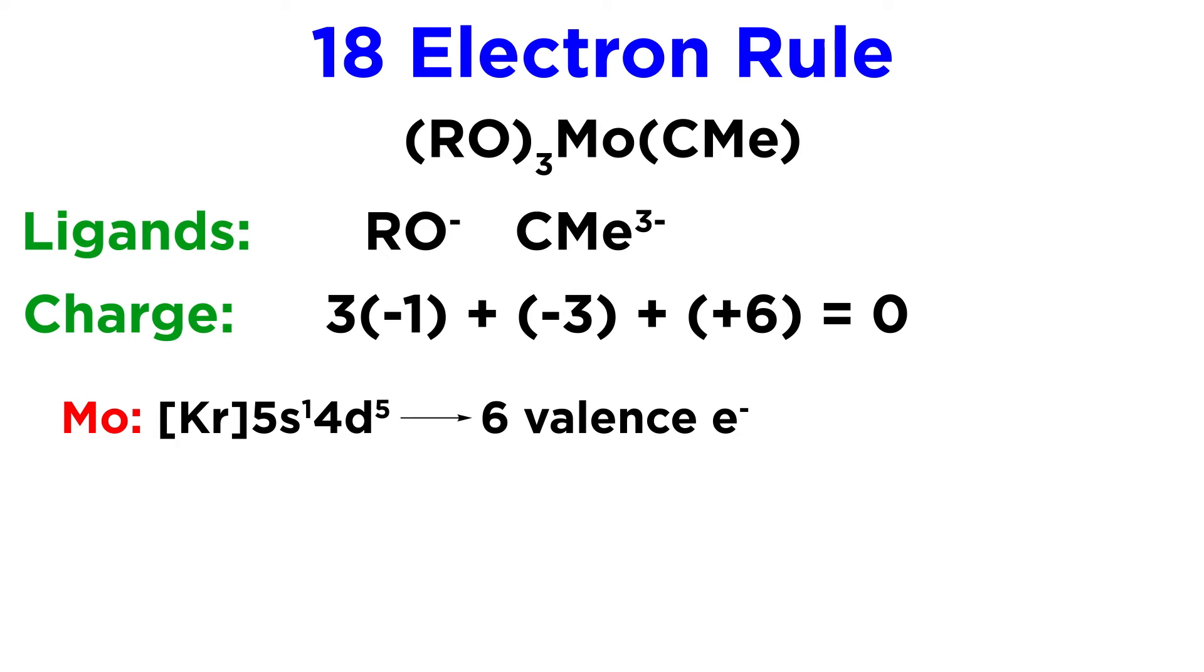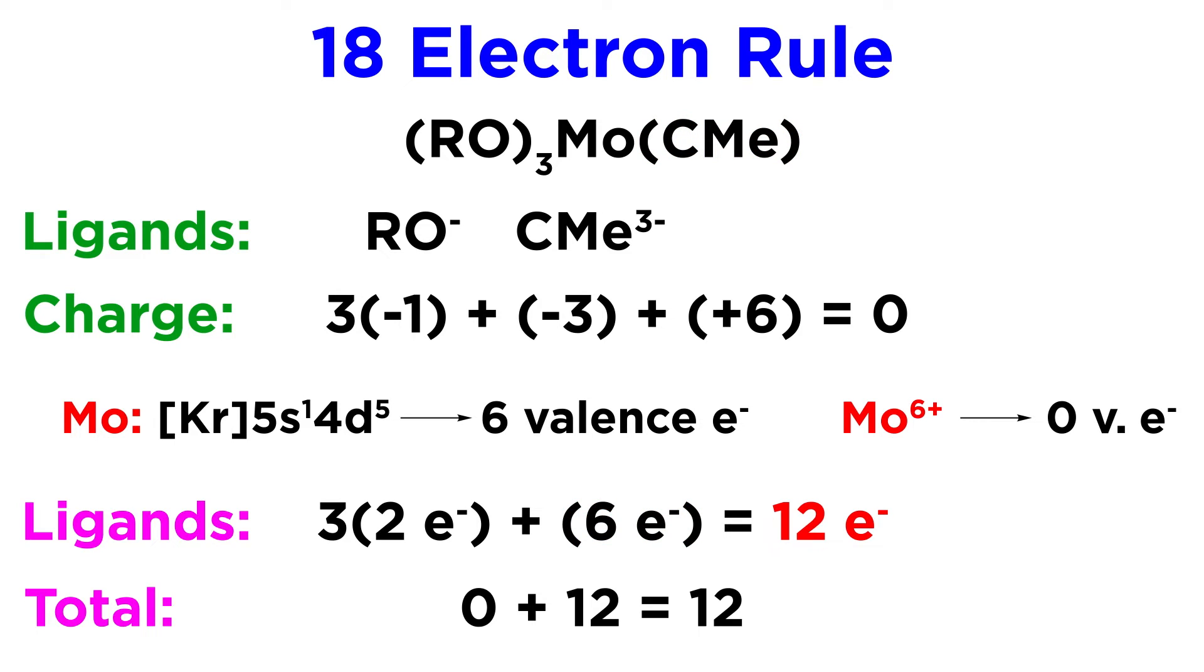Neutral molybdenum has six valence electrons, given that its electron configuration ends in 5s1 4d5, so molybdenum six plus has lost all of its valence electrons. So the only electrons to count are from the ligands, that's two per alkoxide times three, and then six for the alkylodyne, since it makes a triple bond with the metal, and that gives us a total of twelve. That is dramatically less than the ideal count of eighteen, so this is likely to be a very unstable complex. Steric crowding leads to coordinatively unsaturated complexes like this one, which is important in catalysis, as we will see later in the series.